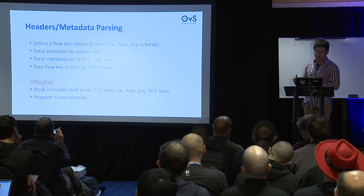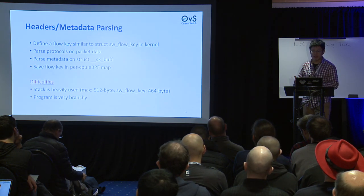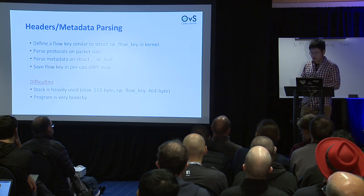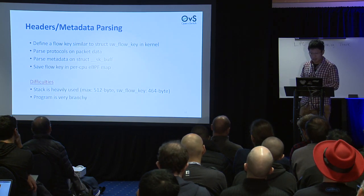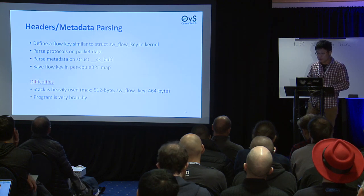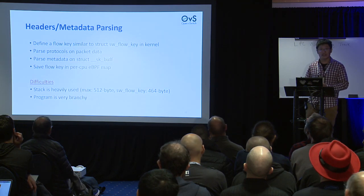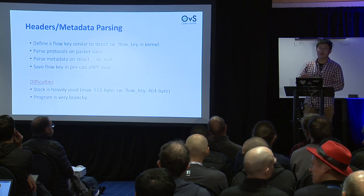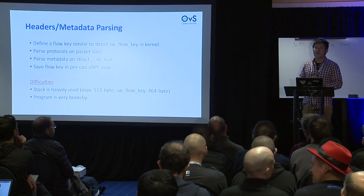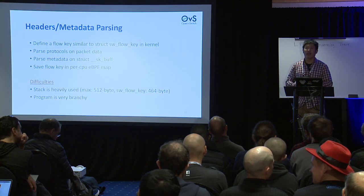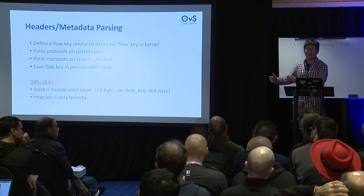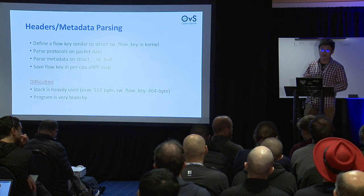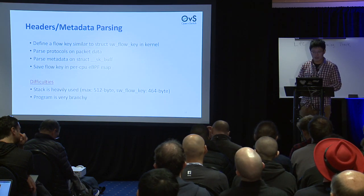There are some difficulties at this stage. The stack is heavily used — the sw_flow_key is 464 bytes, getting close to the maximum. The program is also quite branchy, so after parsing we have to create another BPF program because everything we do next would significantly increase the program's complexity.